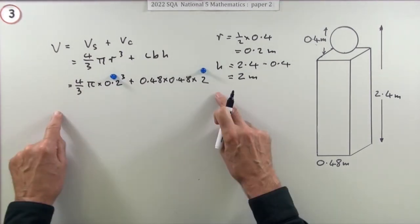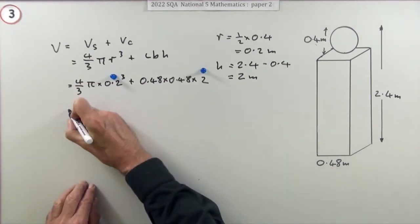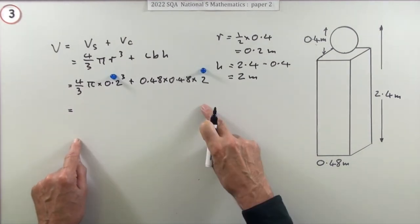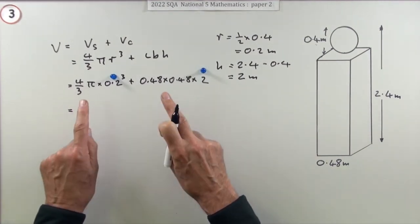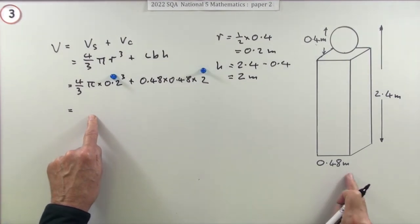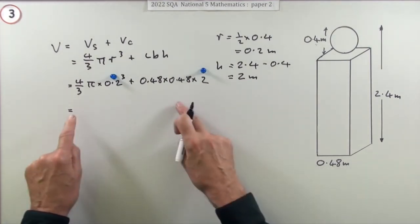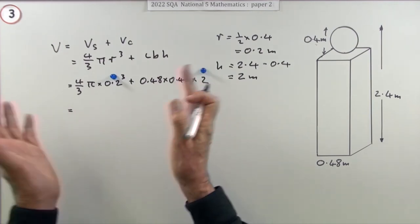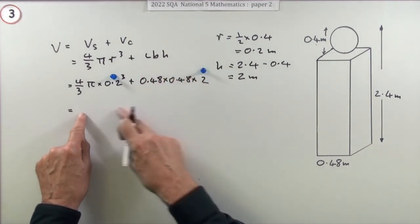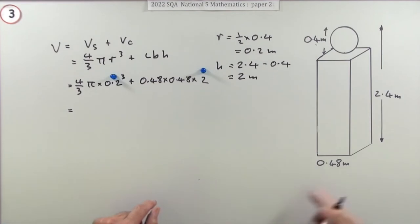The last mark is just for pressing the buttons and writing the answer appropriately with the correct units. Appropriately meaning round it off, although there's no mark specifically for rounding off, just round it off appropriately to your own judgment according to the information you've been given.